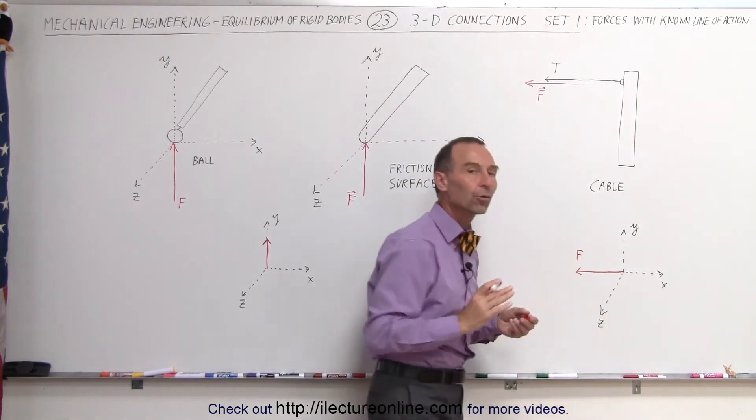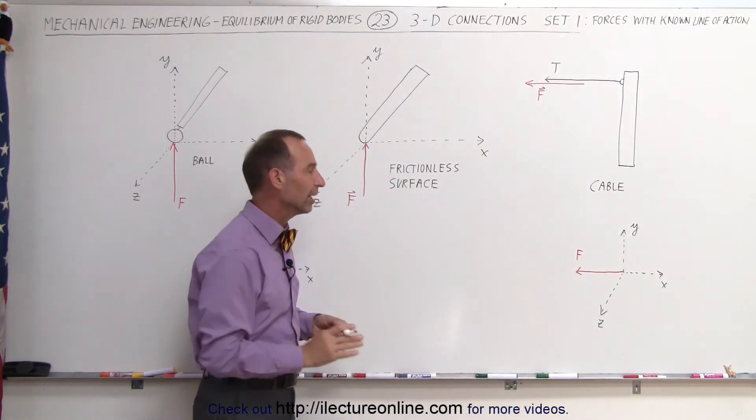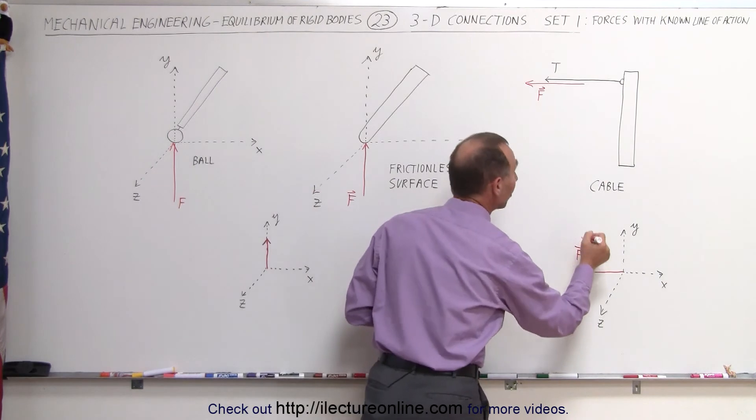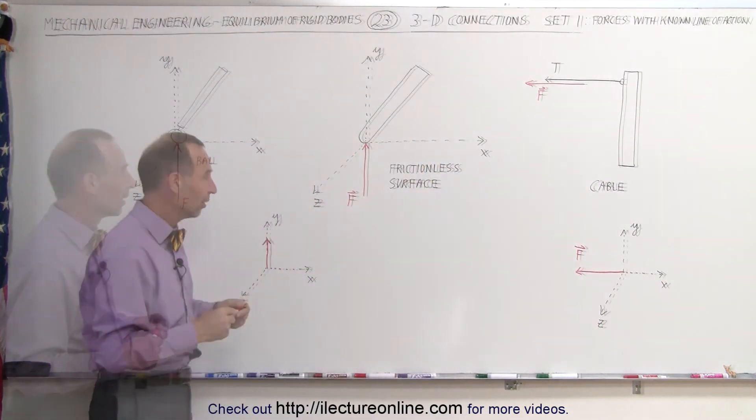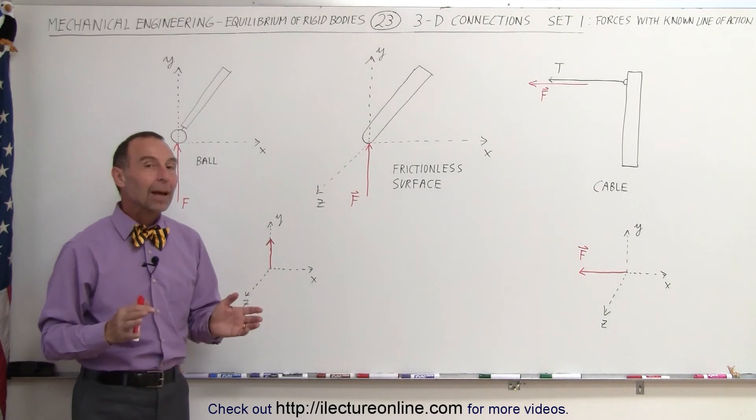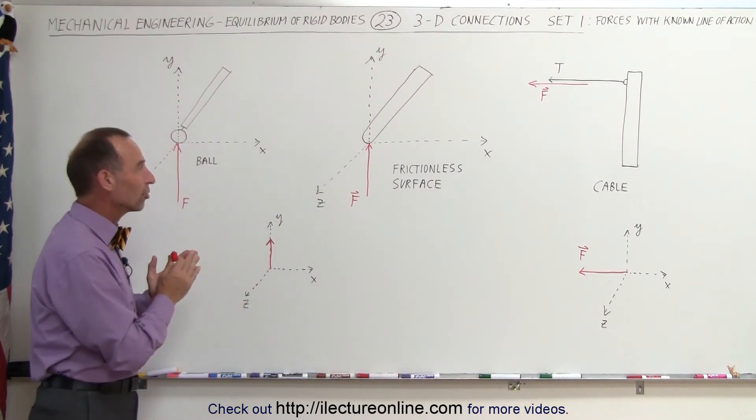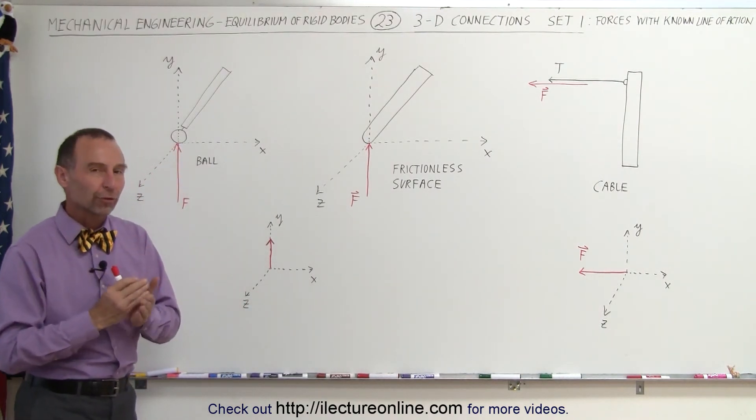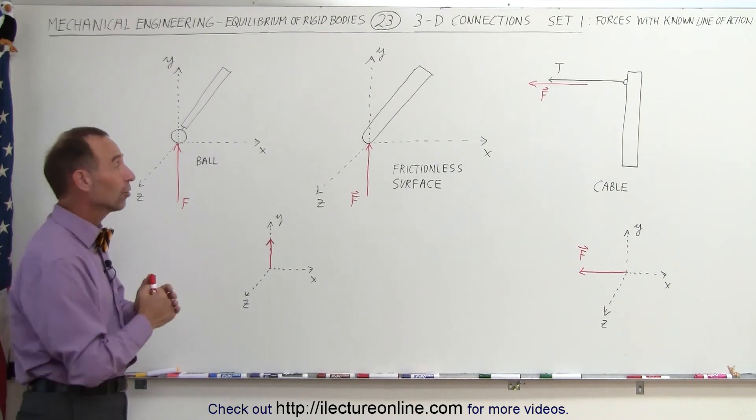It's a singular direction, it is a known line of action - a singular known line of action - so therefore there's only one unknown in this case. So in all of these examples there's just one direction: it's directly away from the surface, normal or perpendicular to the surface.